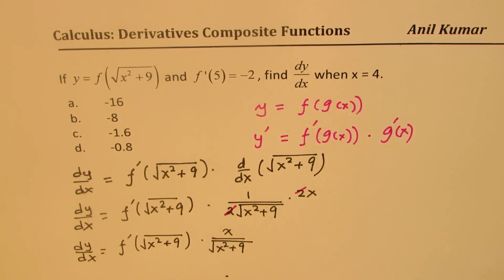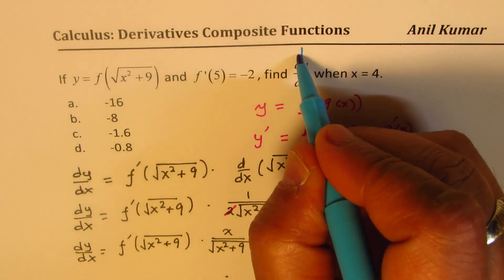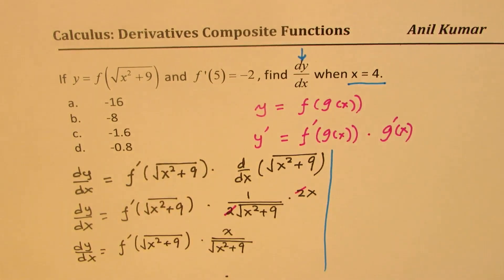Now, what do we need to find? Well, we need to find dy dx at x equals 4, right?